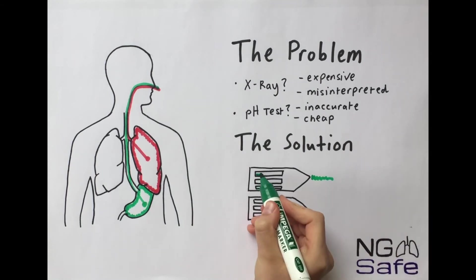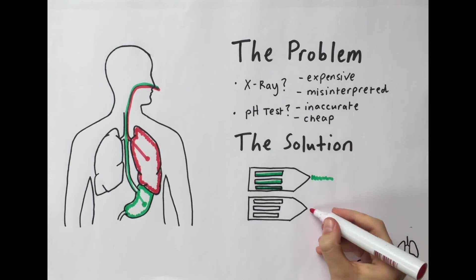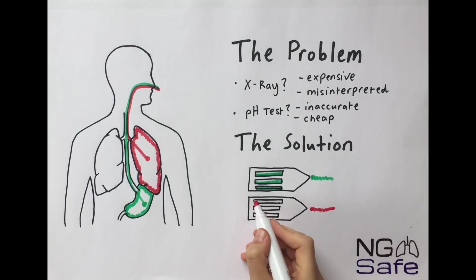Using aspirates routinely collected from NG tubes, this fast and cheap test can provide healthcare professionals with a window of confidence for NG tube placement.